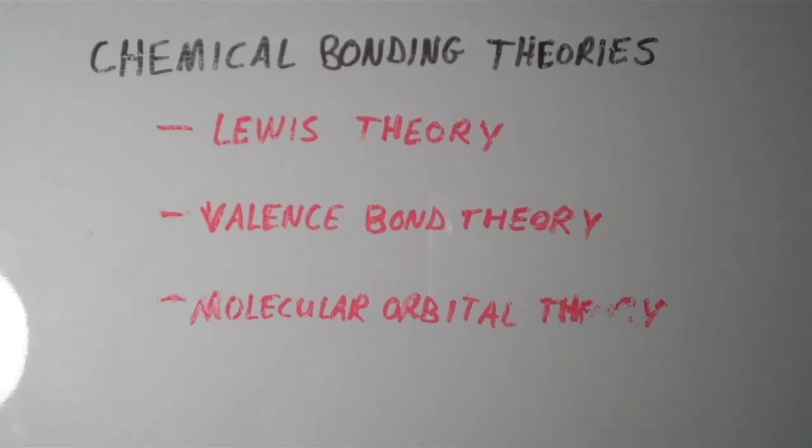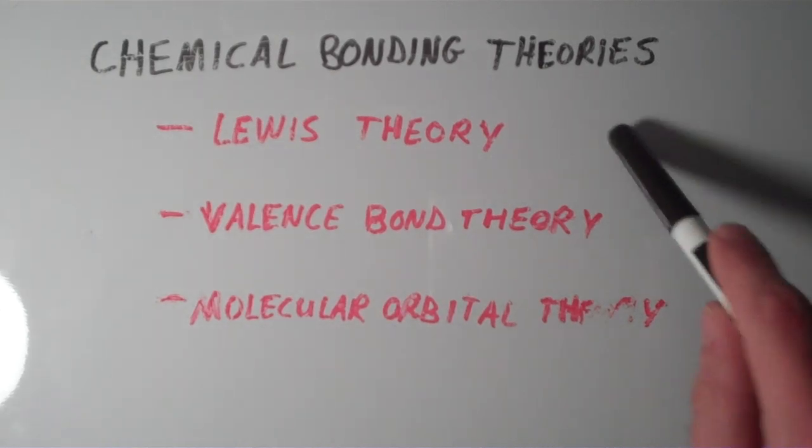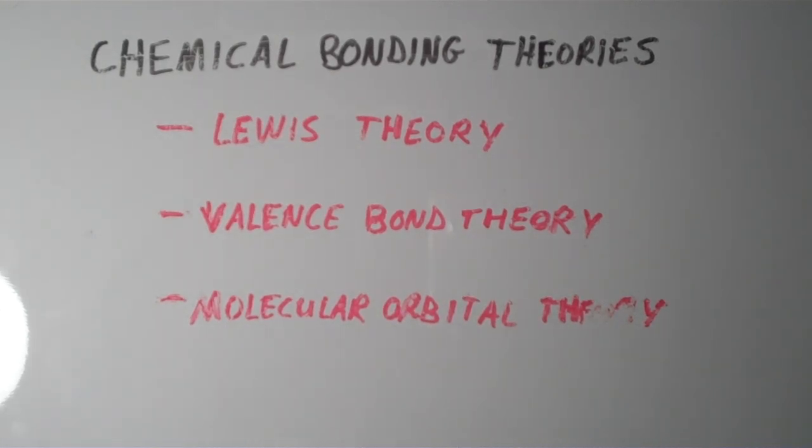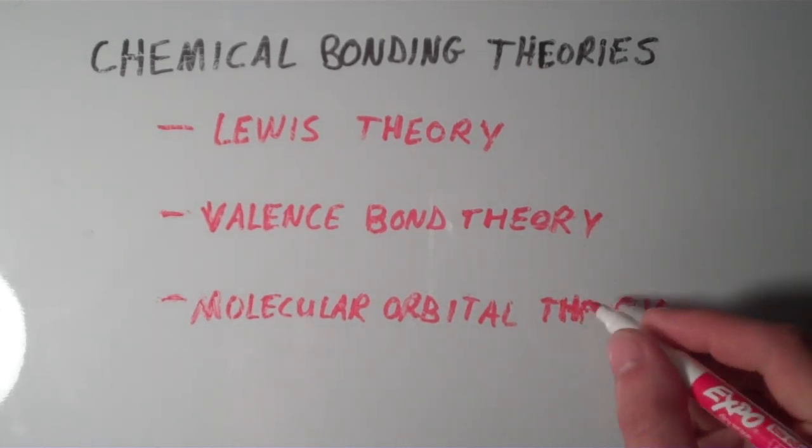So, for instance, if I wanted to figure out the molecular formula for a compound that is only composed of oxygen and hydrogen, then Lewis theory would be very useful for that. If I wanted to figure out the shape of a water molecule, valence bond theory would be quite useful for that. If I wanted to figure out something a little bit more advanced, for instance, why diatomic oxygen is magnetic, then I would start using molecular orbital theory.